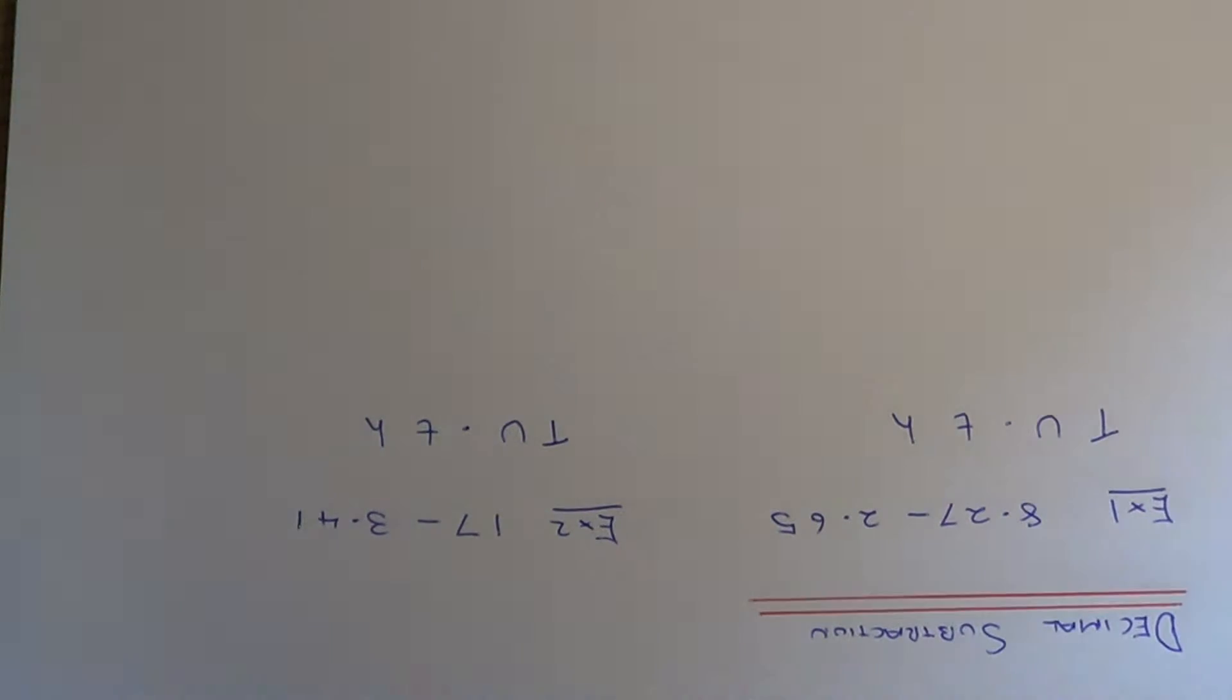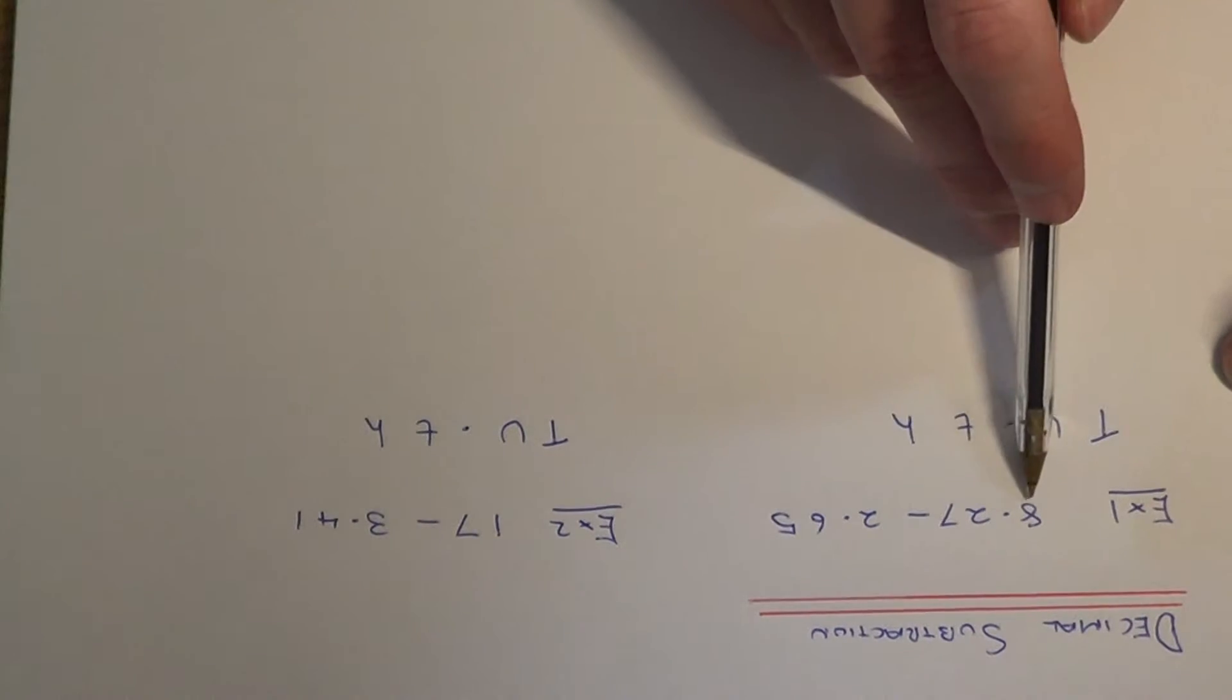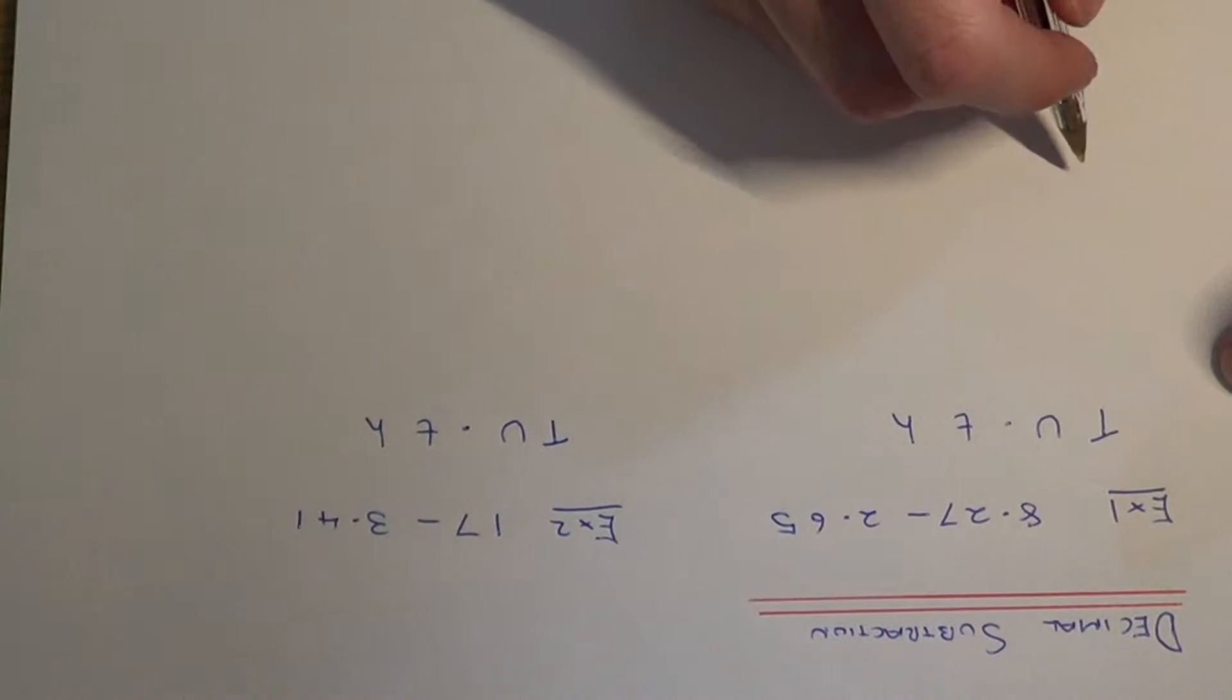Hi, today I'm going to show you a couple of examples on how to subtract numbers which contain decimals. So let's have a look at example 1 then, so we've got 8.27 minus 2.65.